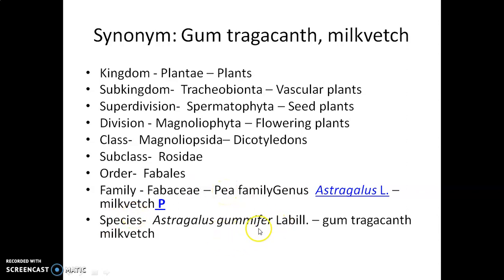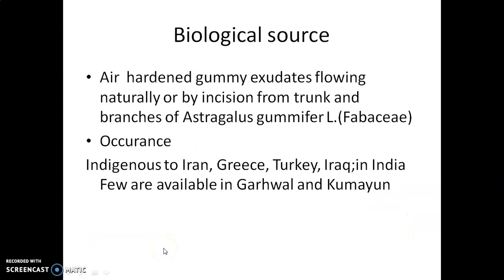The species is Astragalus gummifer. The common names are Gum Tragacanth and Milk Vetch. Tragacanth is a gum — an air-hardened gummy exudate flowing naturally or by incision from the trunk and branches of Astragalus gummifer, family Fabaceae or Leguminosae.